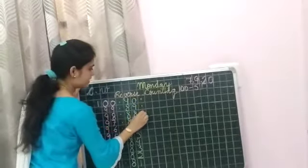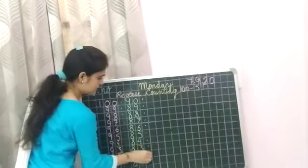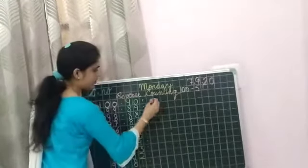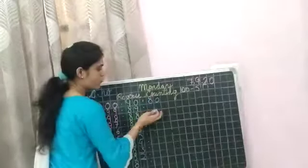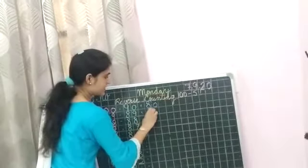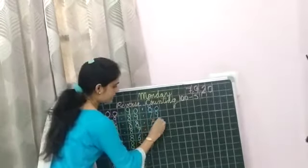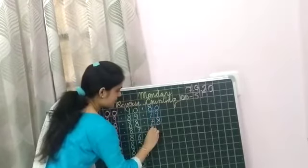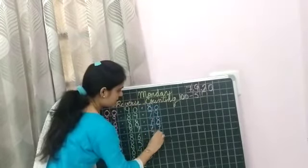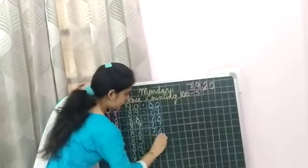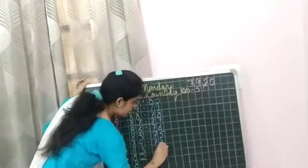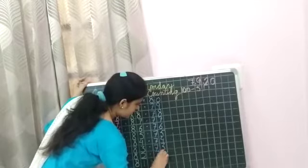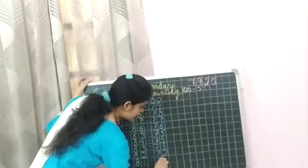Now, again, leave one line. Now, we will write, what comes before eighty-one? Eighty. Now, what comes before eighty? Seventy-nine. Then, seventy-eight. Seventy-seven. Seventy-six. Seventy-five. Seventy-four. Seventy-three. Seventy-two. And, seventy-one.